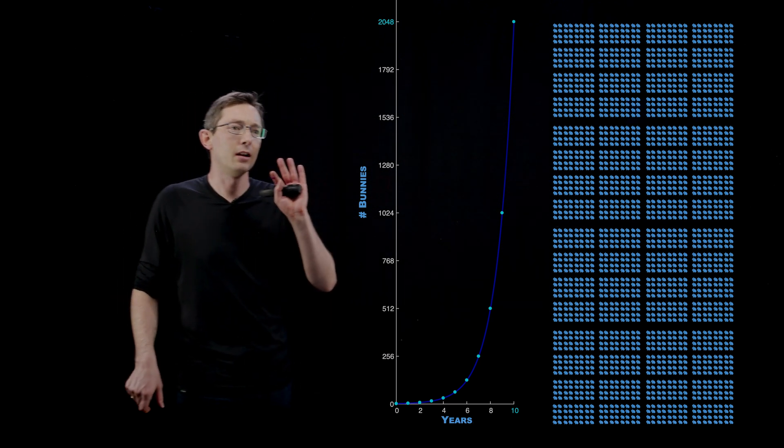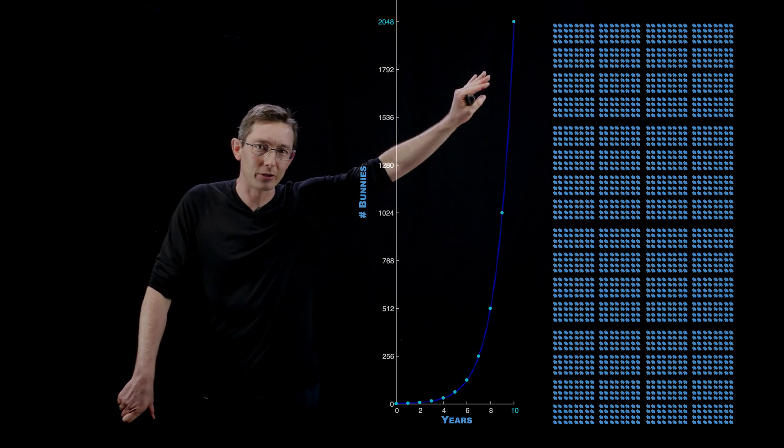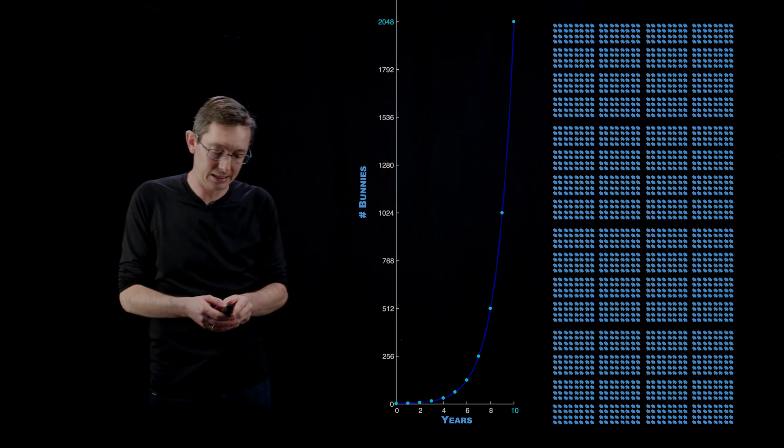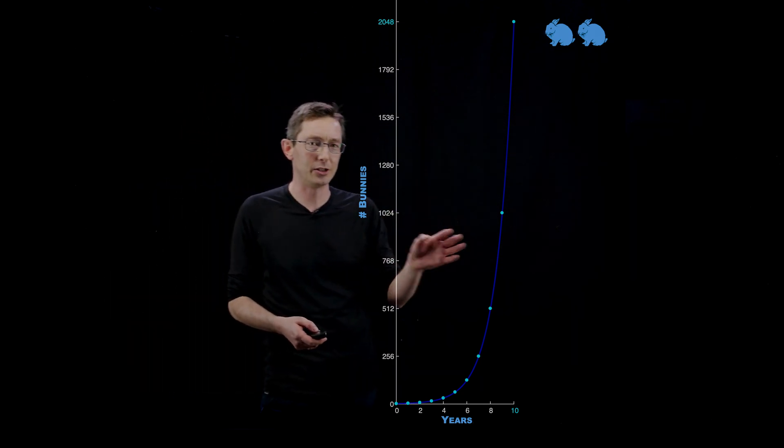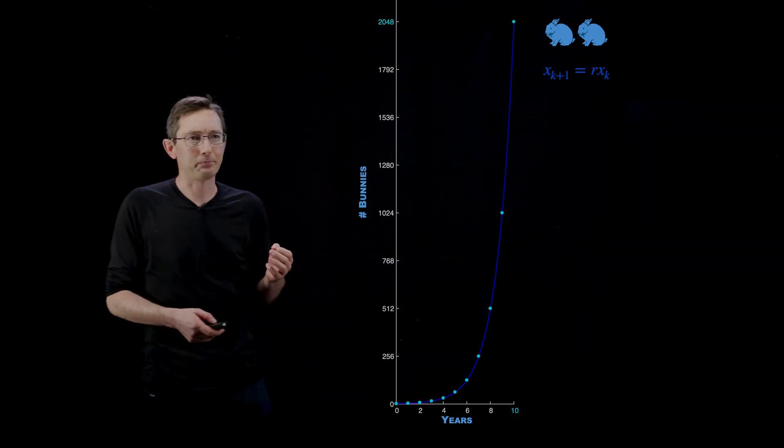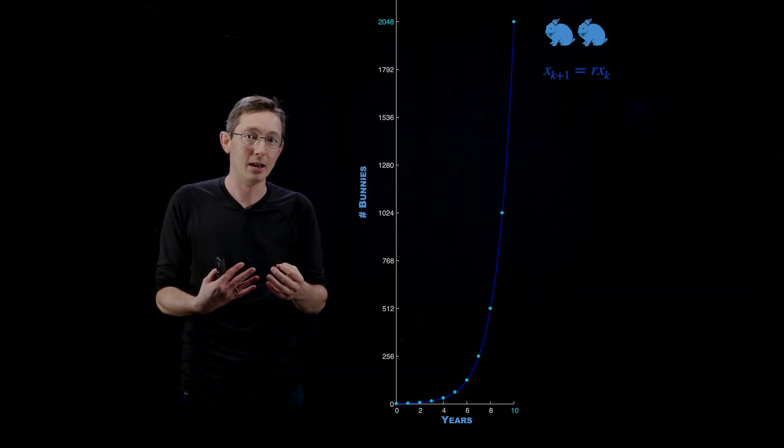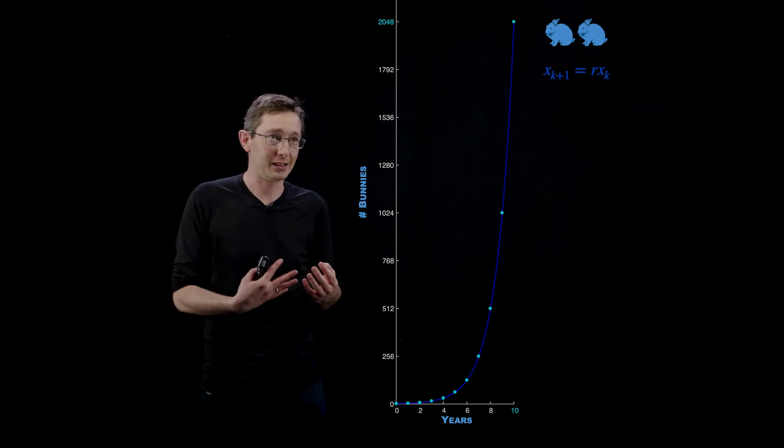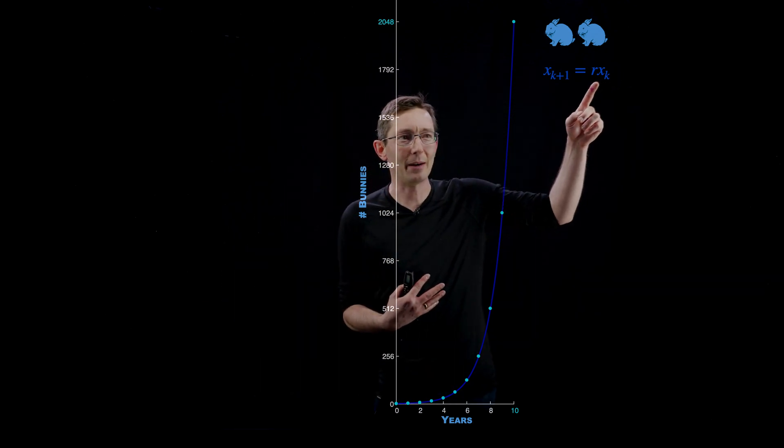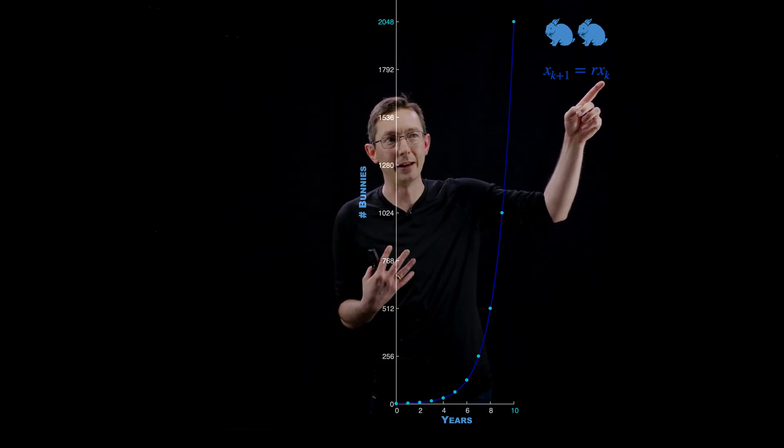Okay so exponential growth looks like this. And the basic idea here, you can actually write this as an equation where essentially you have x at time k plus 1 equals r times x. So x is the bunny population, xk is the bunny population in year k. And xk plus 1 is the bunny population the next year.